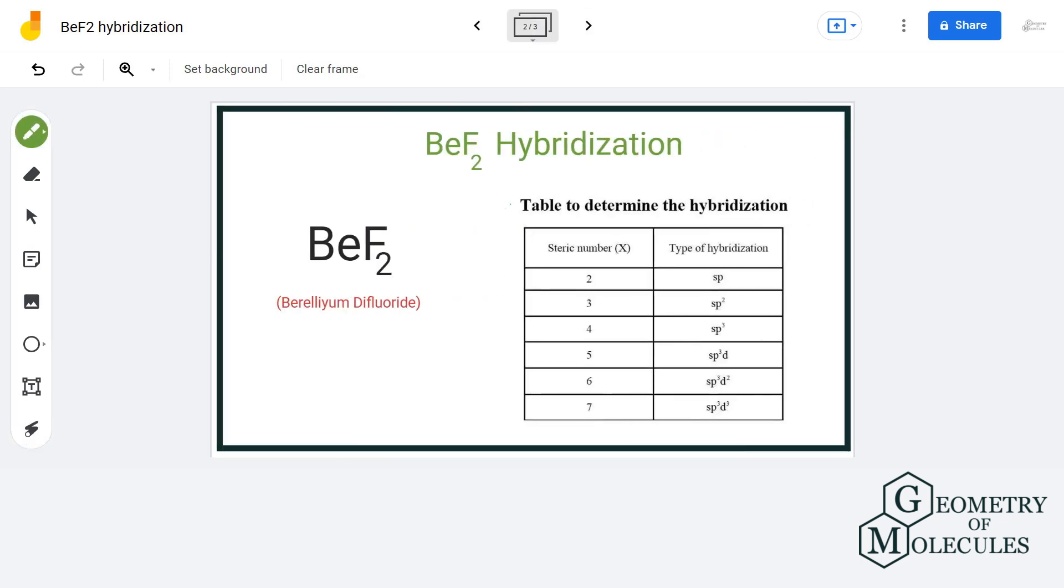So let us add the two. We have two sigma bonds plus zero lone pairs that equals to the steric number of two. Now this corresponds to SP hybridization.